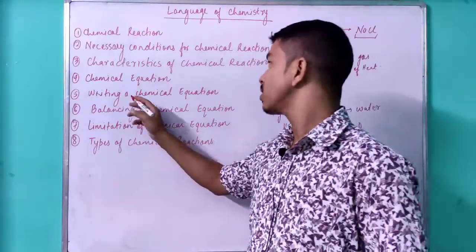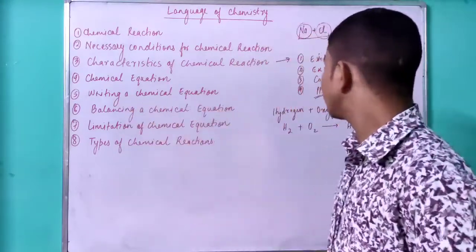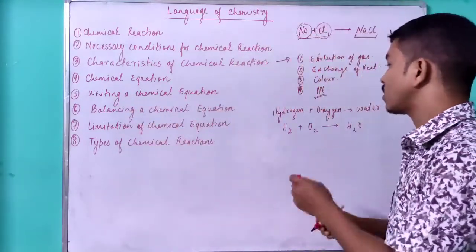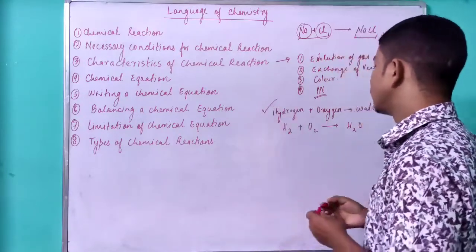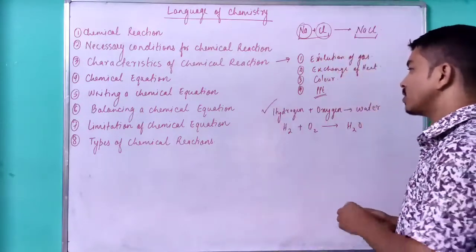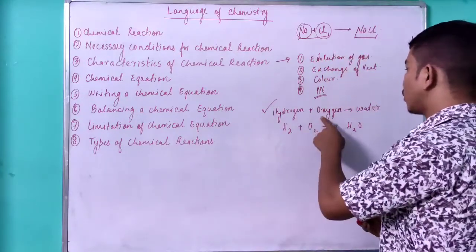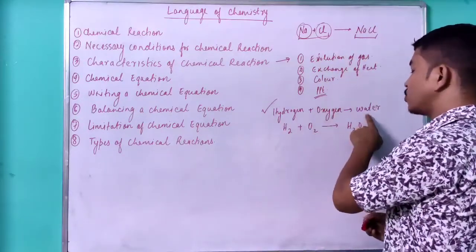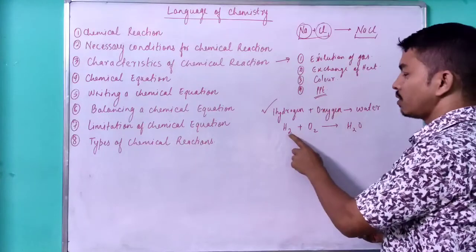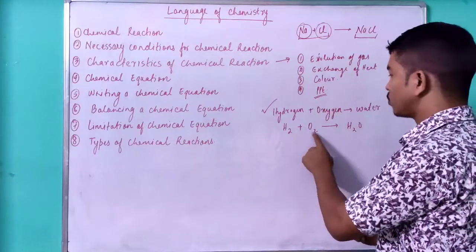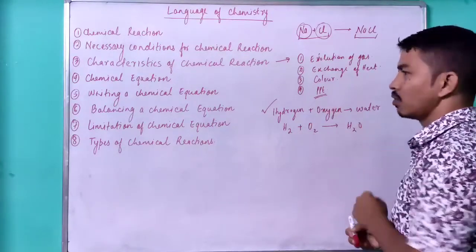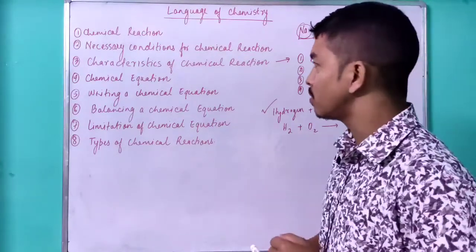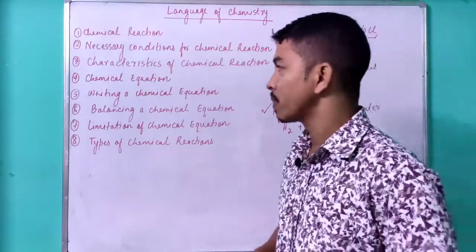Writing the chemical equation is very simple. For example, hydrogen reacts with oxygen to produce water. When we write it: H₂ + O₂ → H₂O. That is how we write a chemical equation.